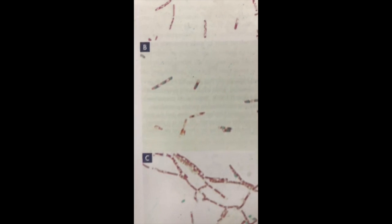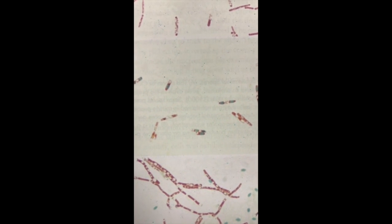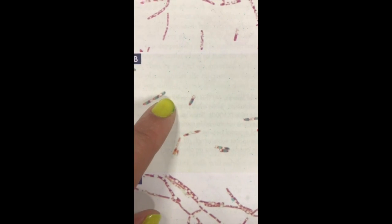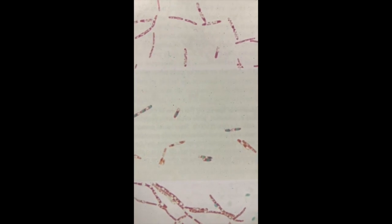And then we'll take a look at B. In this specimen, the spores are still within the mother cell, and that's why you see the green within the red vegetative cells.